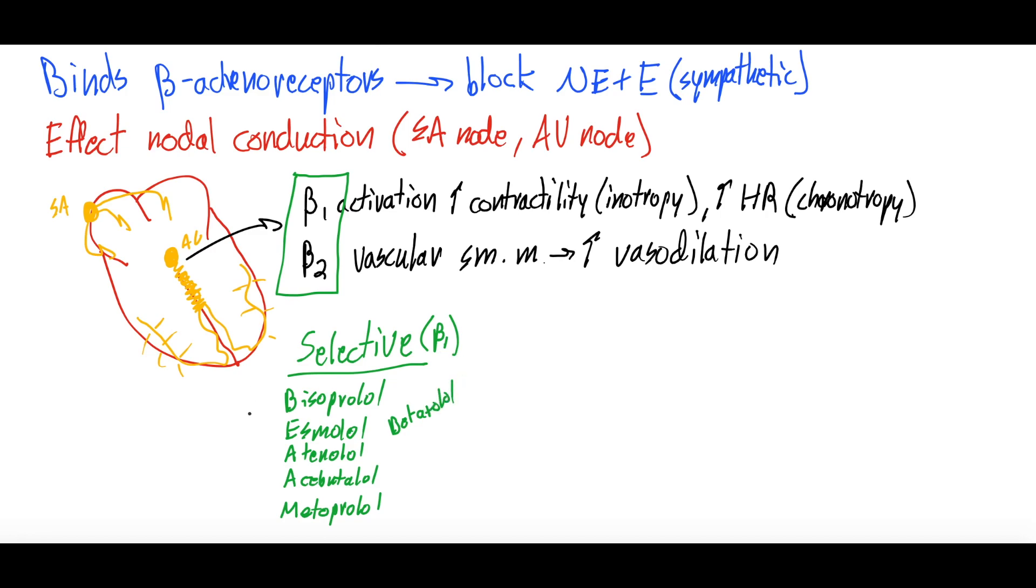When we say selective, what we mean is that they have very little beta 2 action and thus don't tend to affect blood vessels or vasodilation, which is a beta 2 property.